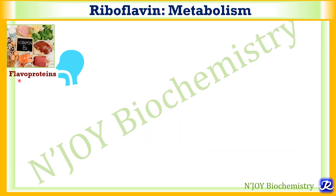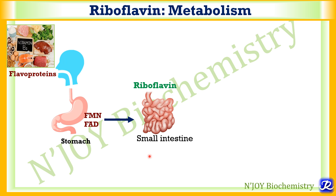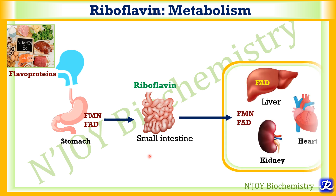Riboflavin is ingested in the form of flavoproteins. Later in the stomach, FMN and FAD are released from the flavoproteins, and then free riboflavin is absorbed in the small intestine by active transport. Through circulation it reaches various organs and is converted in the cellular cytoplasm to its coenzyme forms FMN and FAD. This coenzyme formation occurs mainly in the liver, kidney, heart, and intestine. The form stored in the liver is the FAD form.